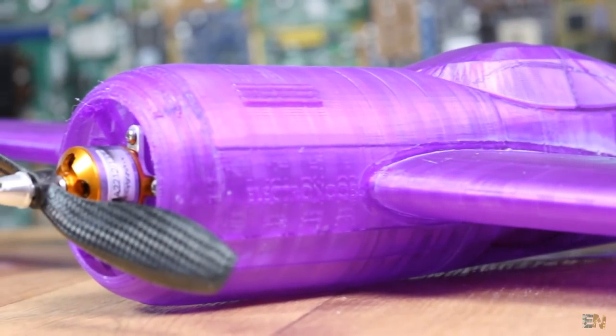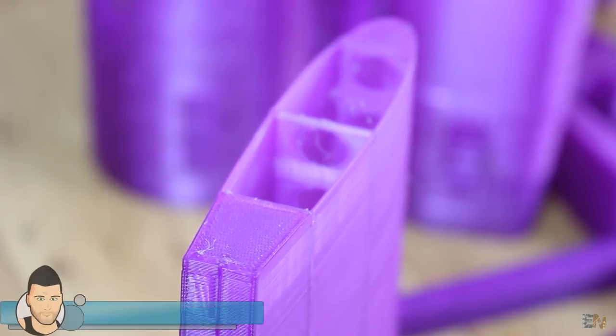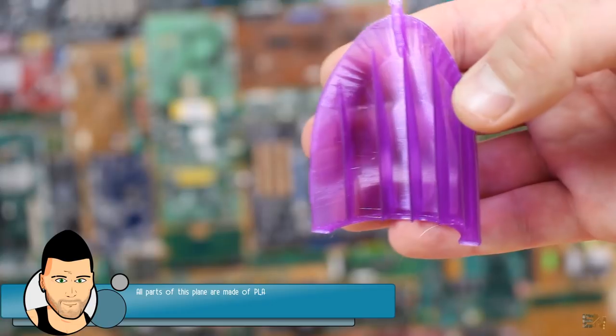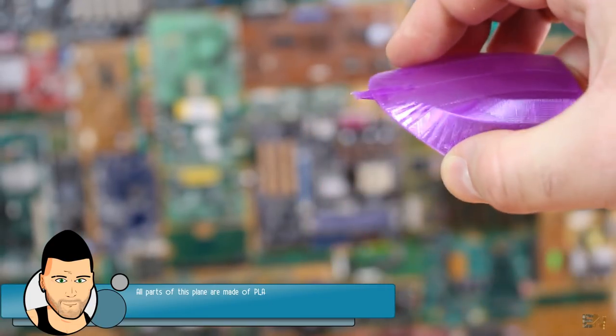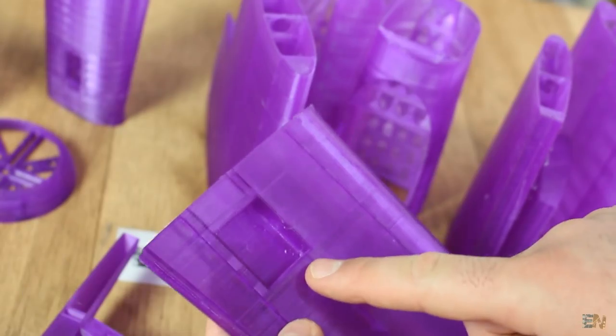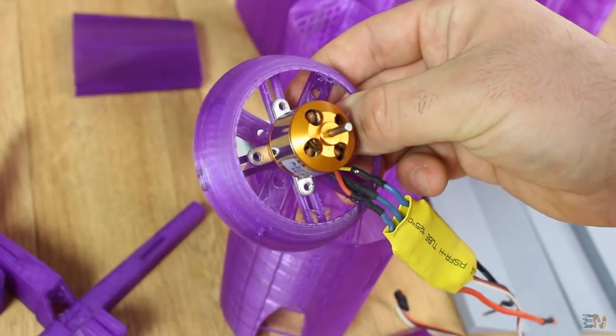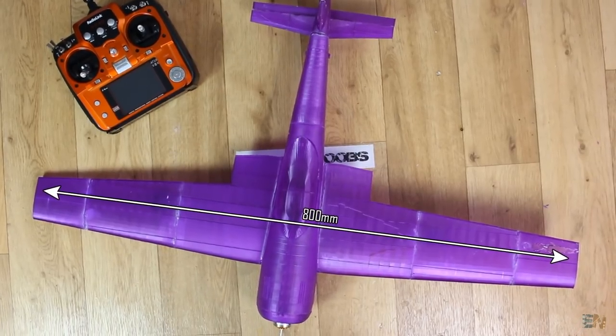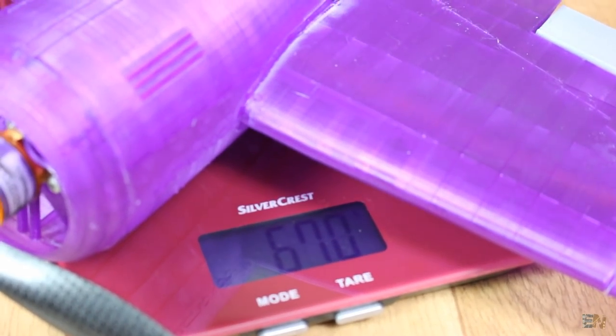So this is my 3D printed plane here. It's made out of translucent purple PLA filament and basically all the parts have only 2 perimeters, so they are quite light but also strong due to internal structure. We have places for servo motors for controls and a big brushless motor here on the nose tip. It has a wingspan of 800mm and the total weight with the battery and everything inside of around 600g.